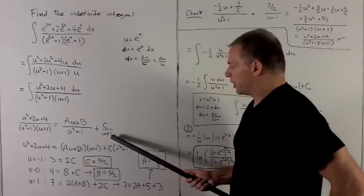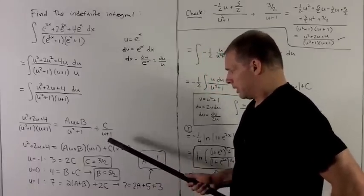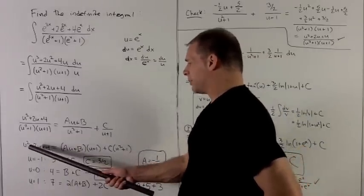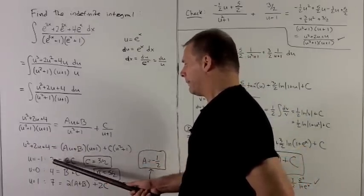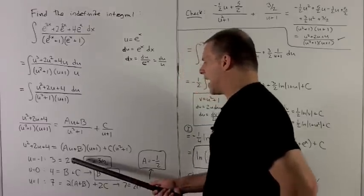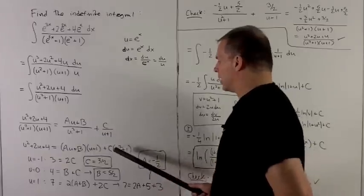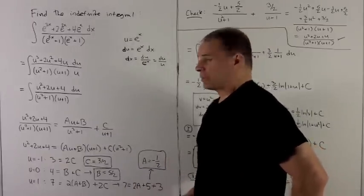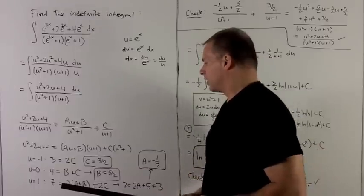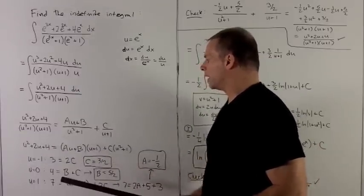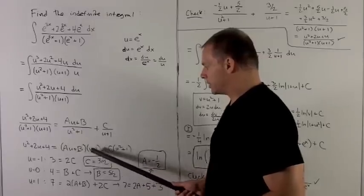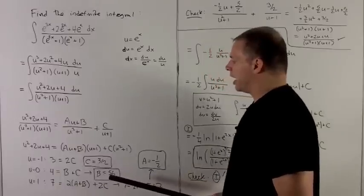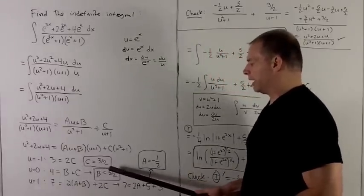First I'll target the root of u plus 1. If I put u equals minus 1 in, on the left side I get 3, and on the right side this term drops out and we get 2c. So c equals 3 halves. Another good point to check is u equal to 0. I get 4 on the left. On the right I get b plus c, and since we know c, b is going to be 5 halves.